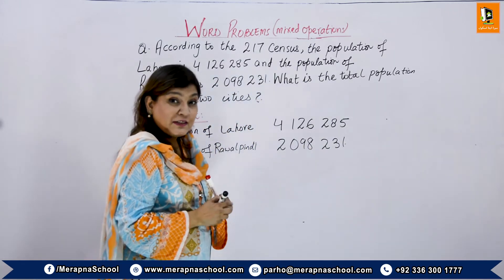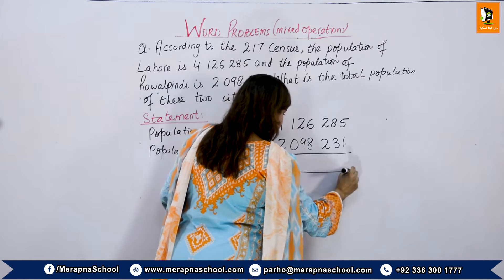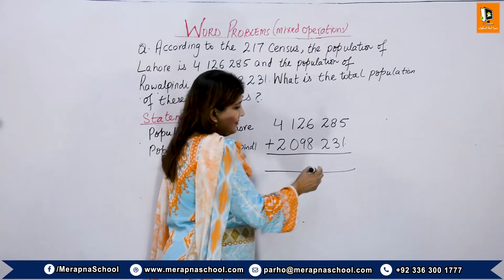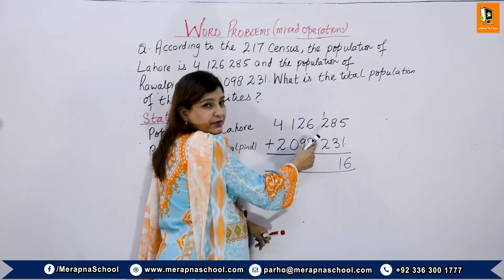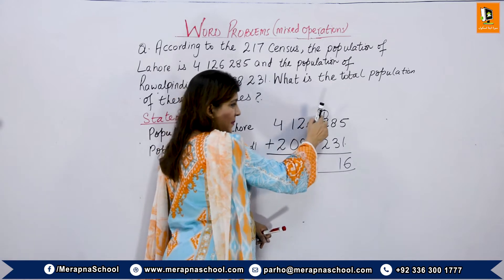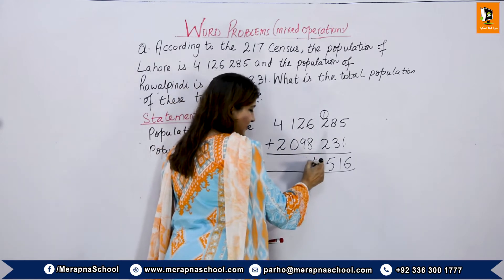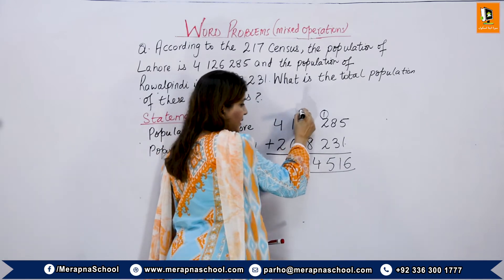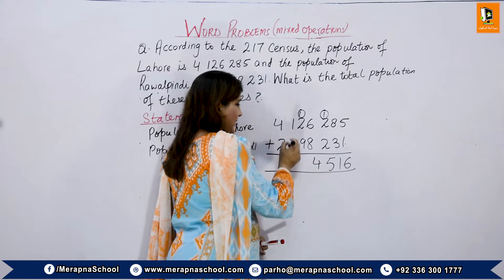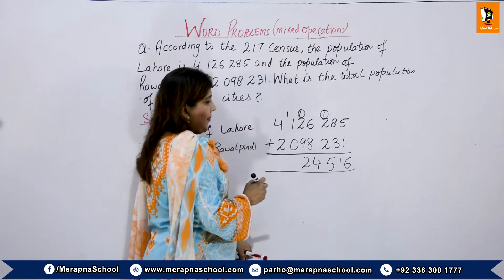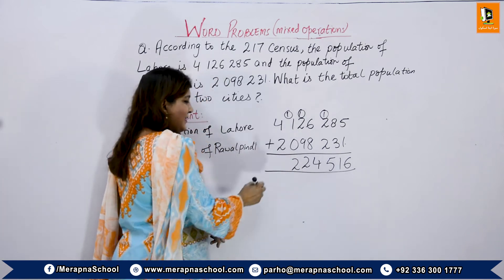Since the word 'total' is given, we add these two numbers. 5 plus 1 is 6. 8 plus 3 is 11 — 1 carry. 2 plus 2 is 4, plus 1 carry is 5. 8 plus 6 is 14 — 1 carry. 9 plus 3: 3 plus 9 is 12 — 1 carry, 2 down. We only add 1 and 1, that is 2, and the last digit is 6.